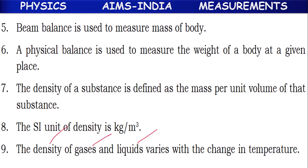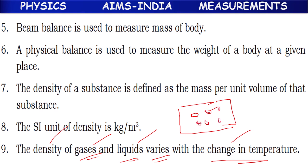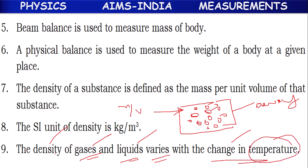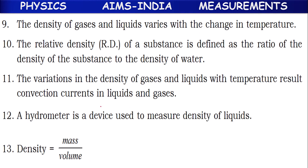The density of gases and liquids varies with the change in temperature. If we heat the gas or liquid, the molecules inside start moving away from one another. The distance between molecules increases, so mass per unit volume — density — will decrease. Whenever we raise the temperature, density of gases and liquids will decrease because molecules move away from one another and the number of molecules per unit volume decreases.